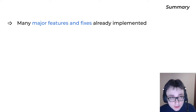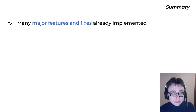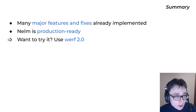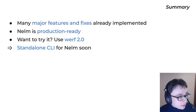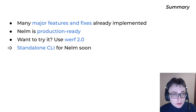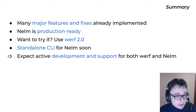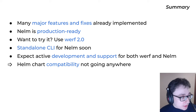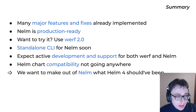Summarizing, we already have a lot of major features and fixes implemented in Nelm and Werf that you won't find in Helm 3. Nelm and Werf are production ready. If you want to try it now, just use Werf version 2.0. A standalone command line interface for Nelm will come soon — it's pretty high on our list of priorities. You can expect active development and support for both Werf and Nelm. Helm chart compatibility in both Nelm and Werf is not going anywhere — that's our strategic goal, so that vanilla Helm charts work as they worked in Helm, but probably better. At the end, we really want to make out of Nelm what Helm 4 should have been.